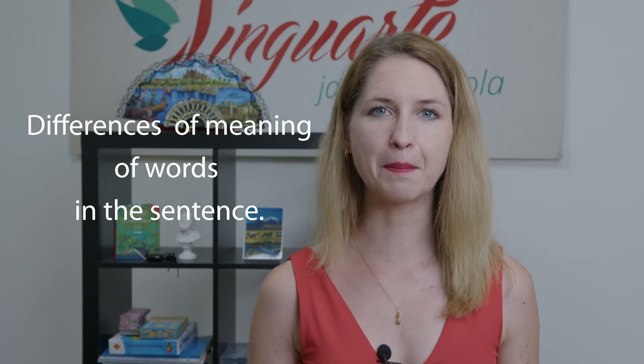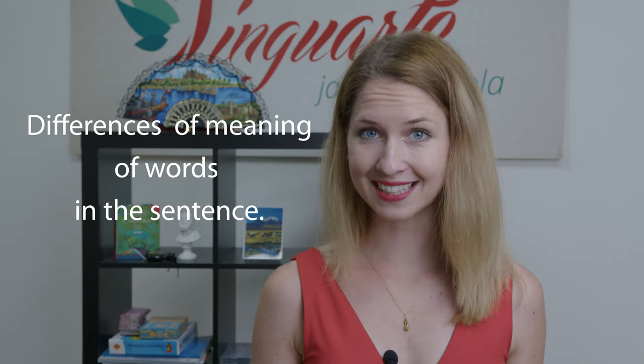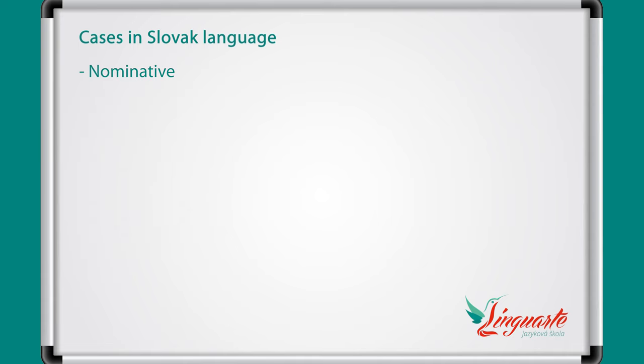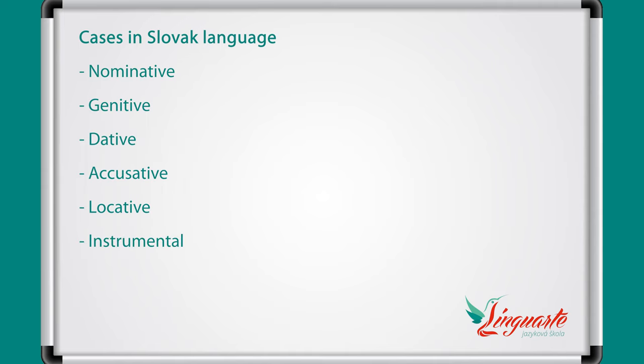To start, it's important to understand that Slovak language uses cases to describe differences in the meaning of the word in the sentence. Each of these cases has an ending to show their meaning in the sentence. Slovak language has six cases called nominative, genitive, dative, accusative, locative, instrumental.